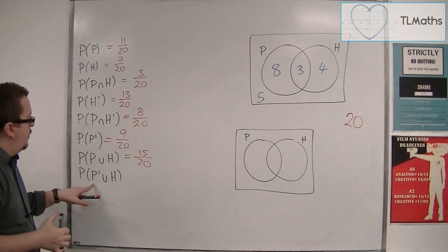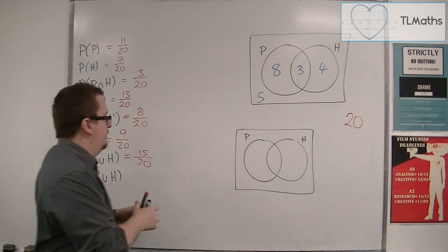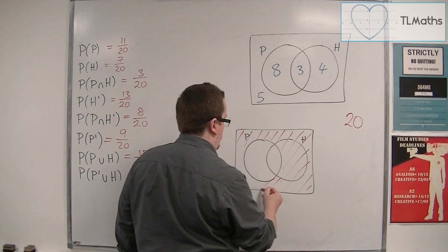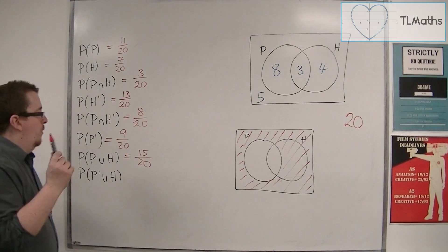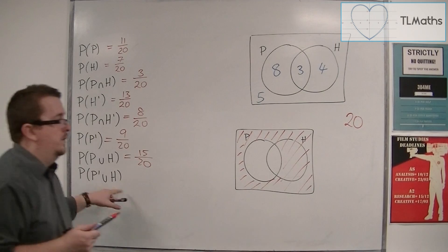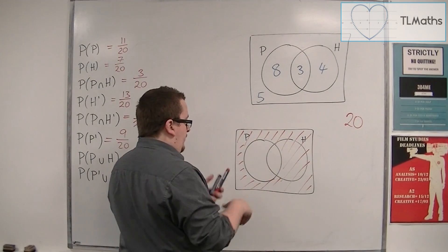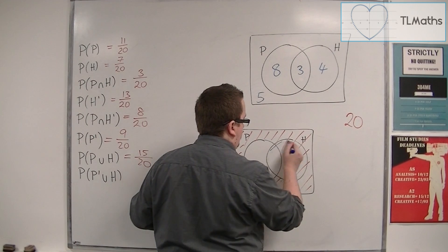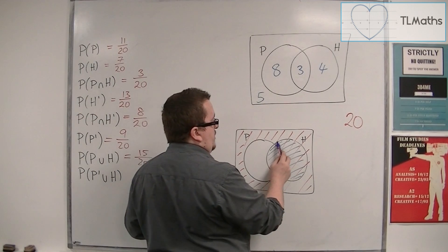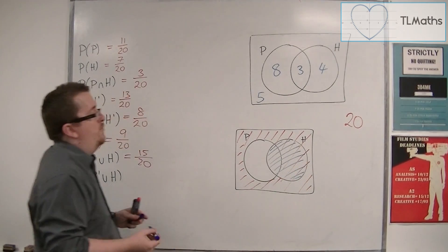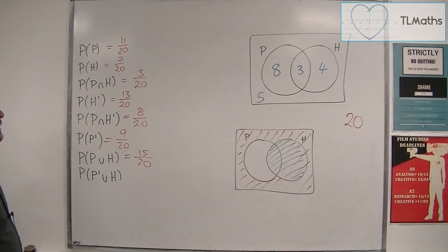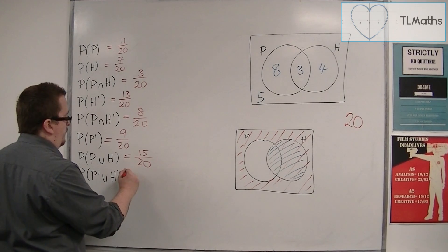So we've got not physics, which is outside of P or history or both. So outside of physics or history or both, which is this crescent shape here. And so we're including everything but that 8 that I've got left over. And so this would have to be 12 out of 20.